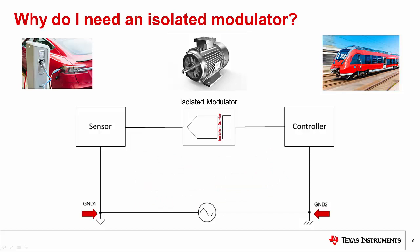The second reason for using an isolated modulator is protection against high voltage. When industrial equipment is running at hundreds of volts, isolated modulators can safely withstand high voltage surges that can damage equipment or harm humans.